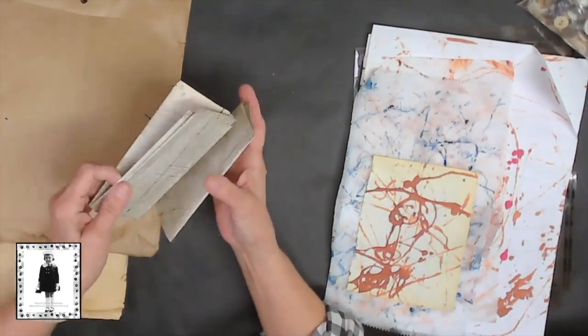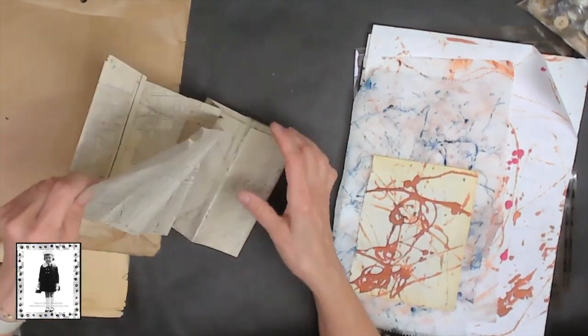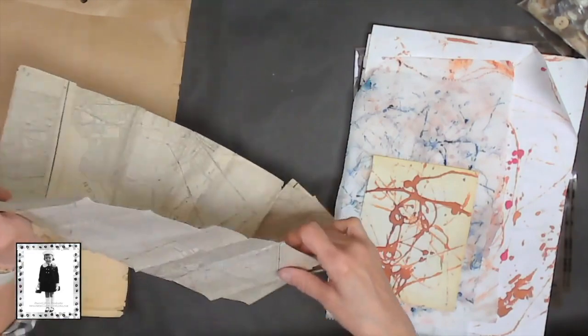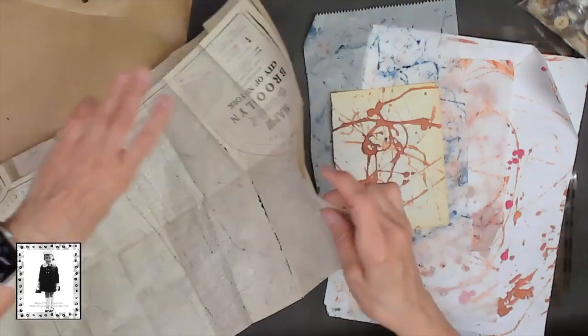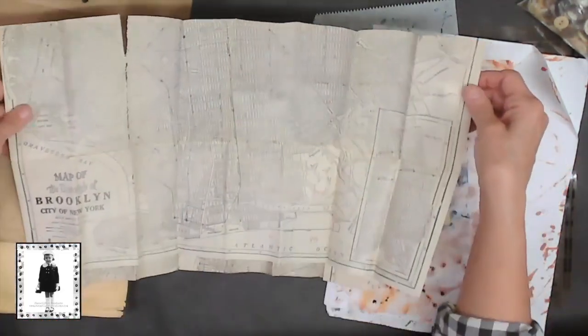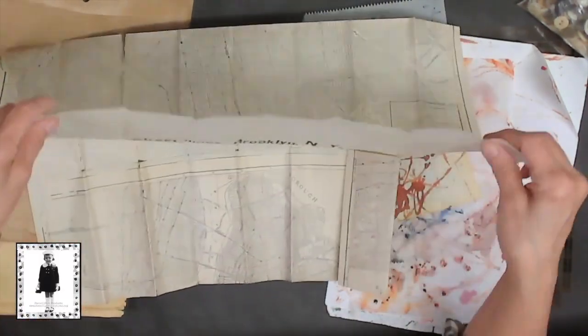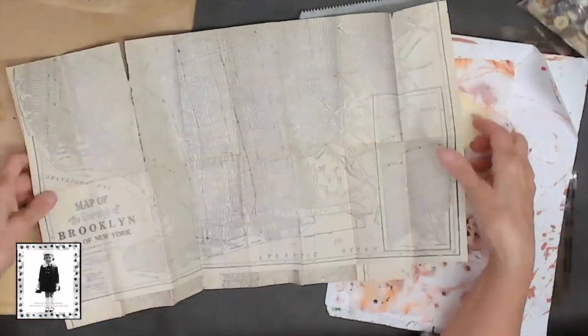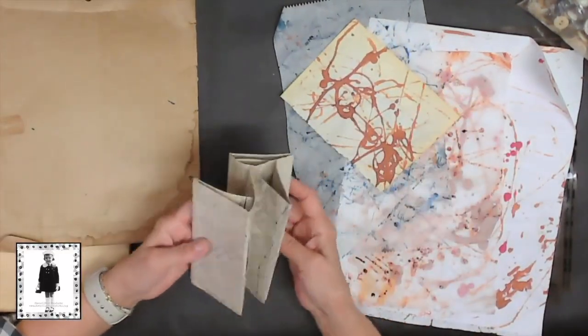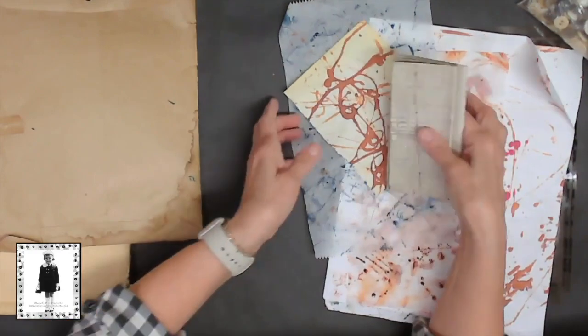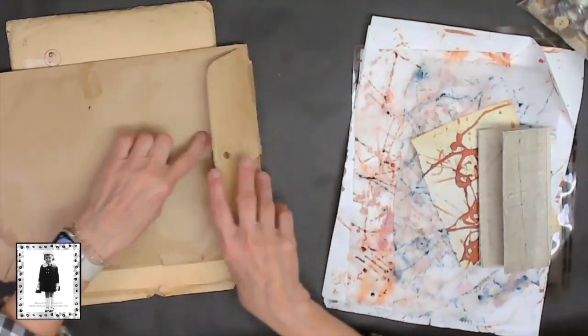This little map I found in the store just in this big old bin of crappy stuff and it's from Brooklyn New York. I mean look at this, it is beautiful. I absolutely love it. It's ripped in places but it is so exquisite. Two dollars. Love love love.